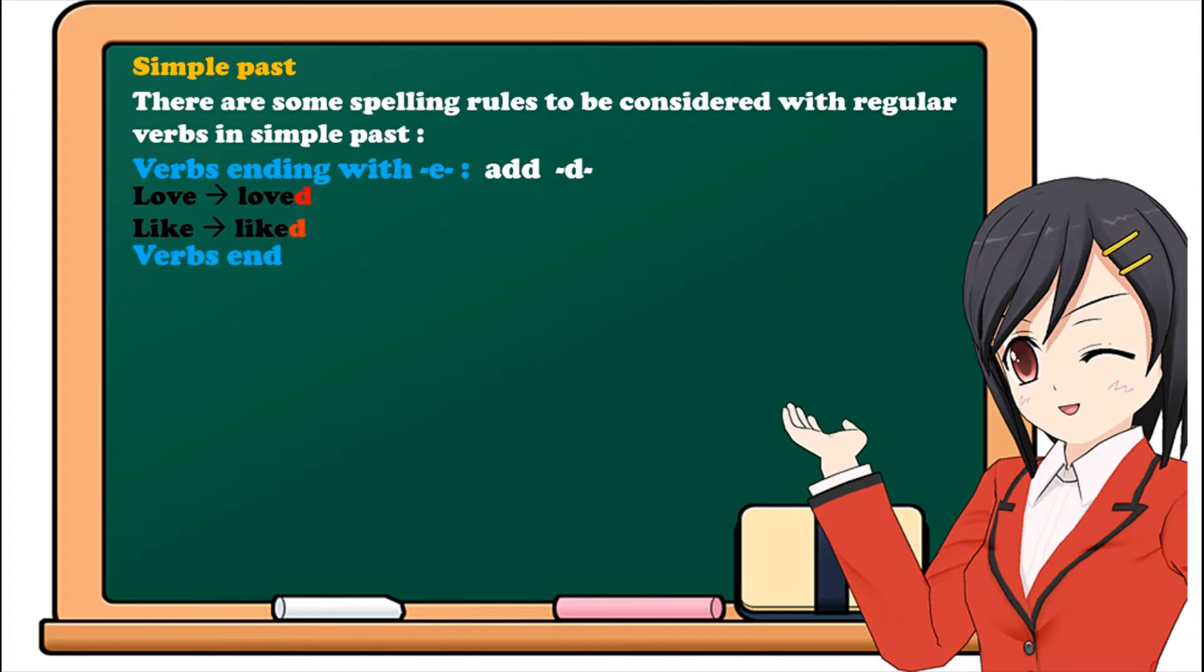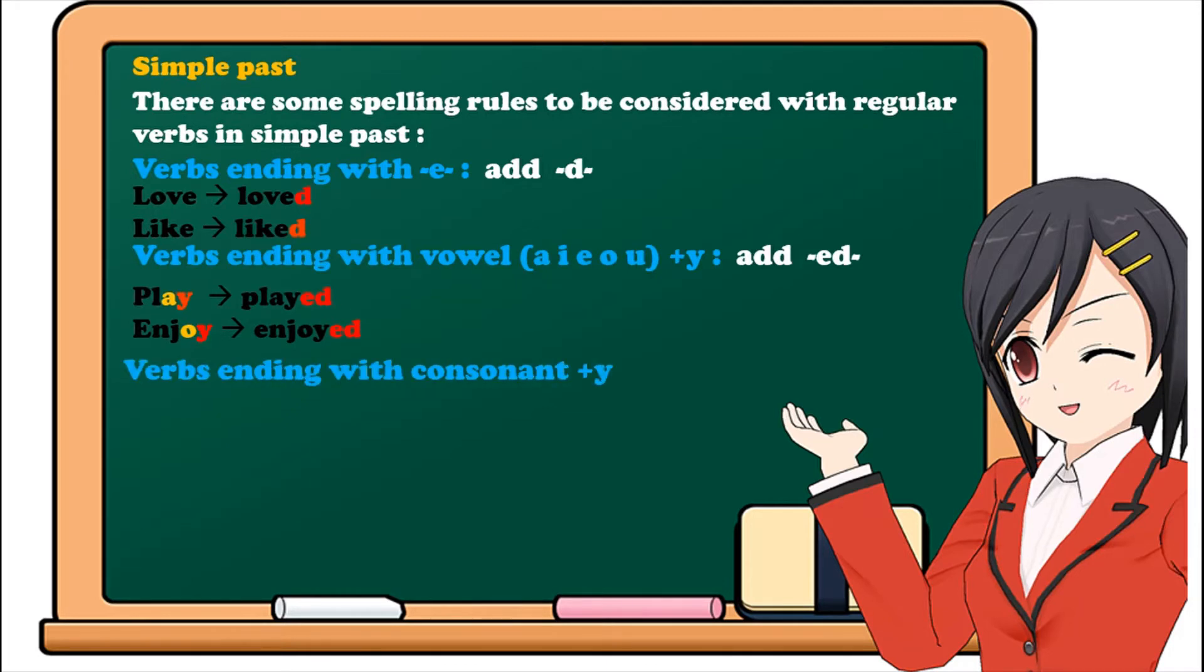Number 2: Verbs ending with vowel - A, I, E, O, U - plus Y, we add ED. For example, play, played, enjoy, enjoyed. For verbs ending with consonant, cry, cried.